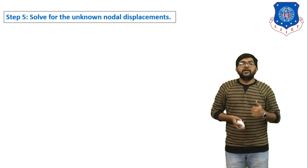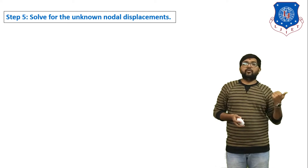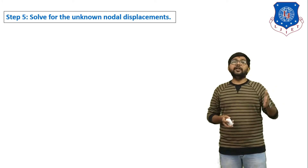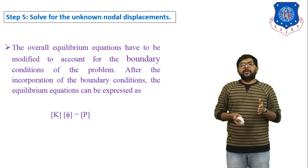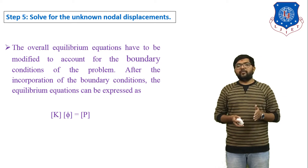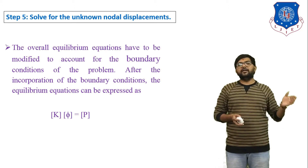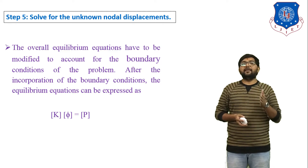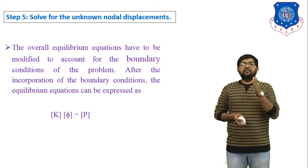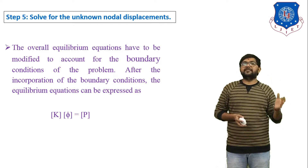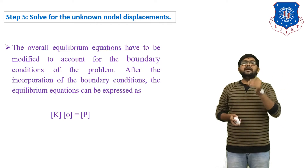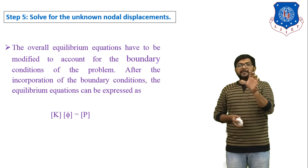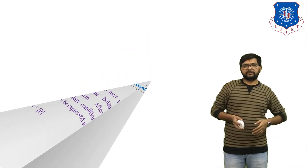Step number five: solve the unknown nodal displacements. We have to solve the stiffness matrix equation and find out the nodal displacement at each node. The overall equilibrium equation has to be modified to account for the boundary conditions of the problem. After incorporating the boundary conditions, the equilibrium equation is expressed as KΦ equals P, which is the equation of stiffness.